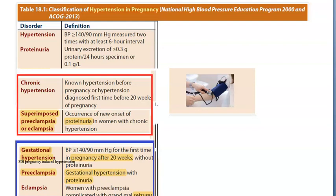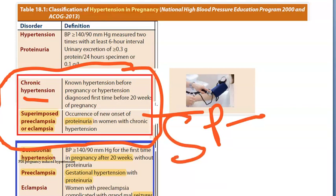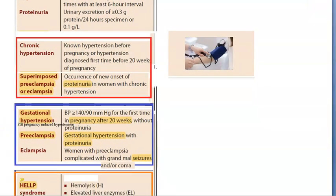This box shows a woman who already has hypertension before pregnancy — she is called a chronic hypertension case. That means hypertension can be detected in her before 20 weeks of pregnancy. If she develops new onset proteinuria during pregnancy, this is called superimposed preeclampsia. If she further develops seizures, it becomes superimposed eclampsia.